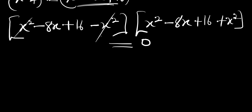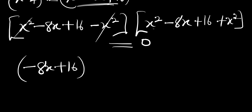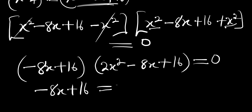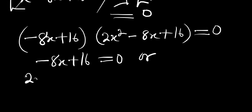Now, x squared cancels with negative x squared in the first bracket, leaving negative 8x plus 16. In the second bracket, x squared plus x squared gives 2x squared, so we have 2x squared minus 8x plus 16, all equals zero. This gives us two separate equations to solve.